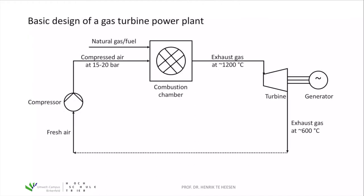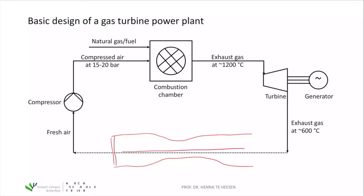The basic design of a gas turbine power plant is shown in this figure. Starting on the left-hand side with the inlet of fresh air, we have the turbine with a shaft. Fresh air enters the cold section of the turbine into the compressor, where we compress the air by reducing its volume and increasing the speed. This gives us compressed air at a pressure of about 15 to 20 bar.